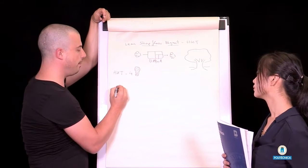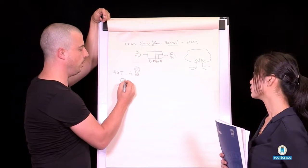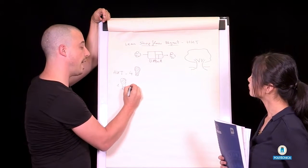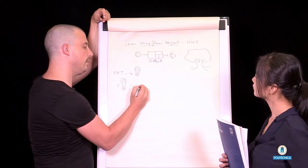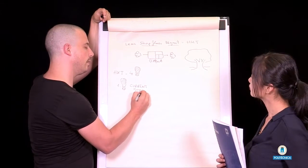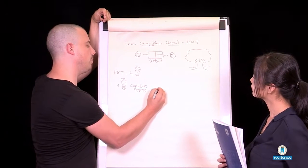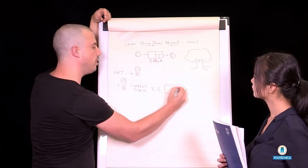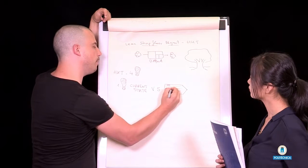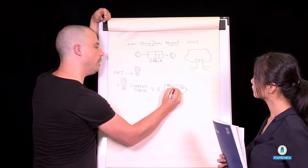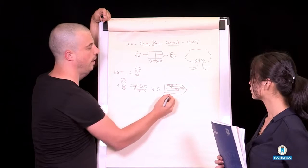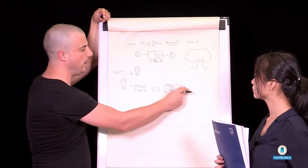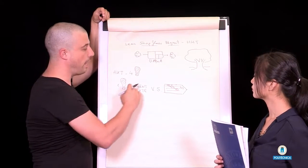The first step is to understand the current state of the value stream. So we just go and try to understand what sort of steps, process steps and material and information flow interchange is happening throughout the value stream.